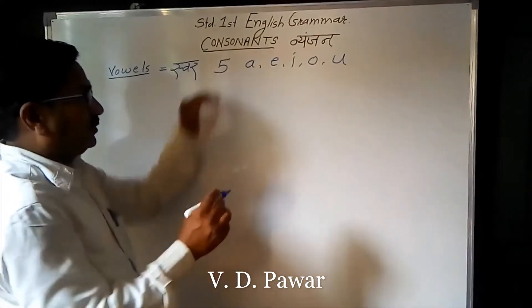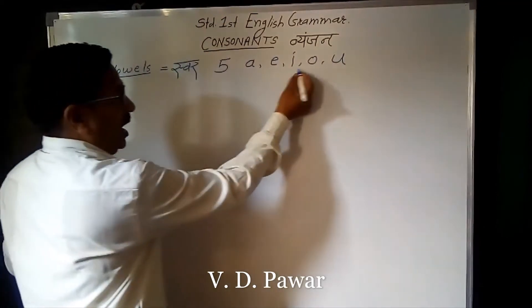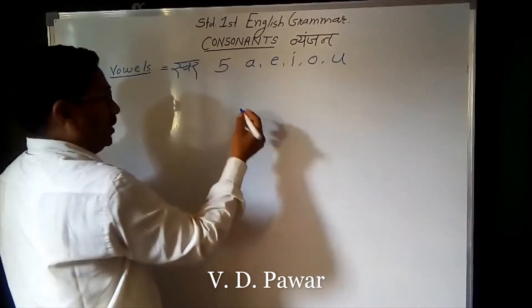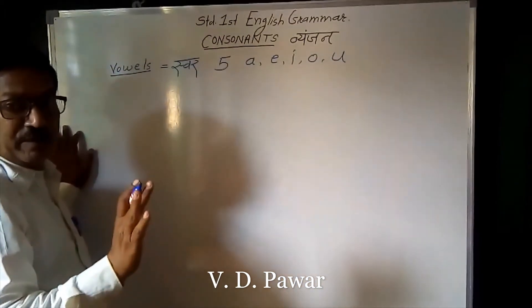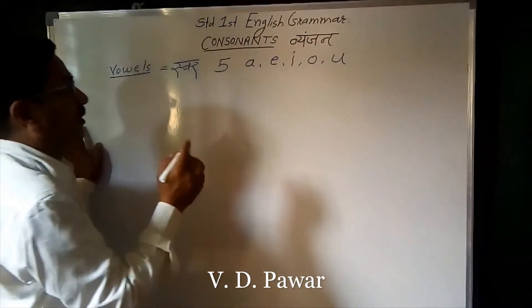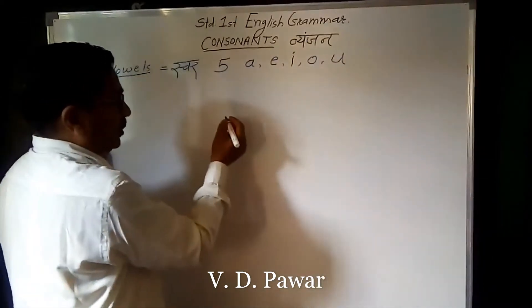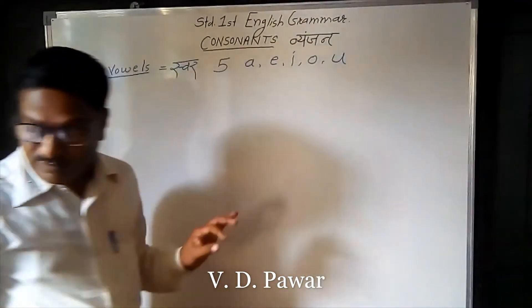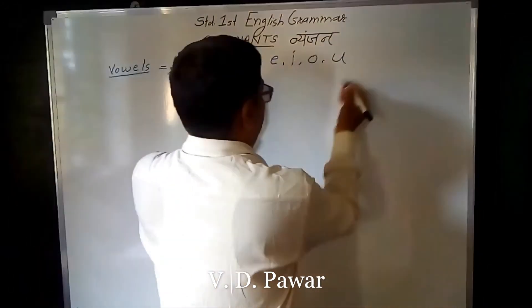Now we have consonants. A, E, I, O, U — these are the five vowels.